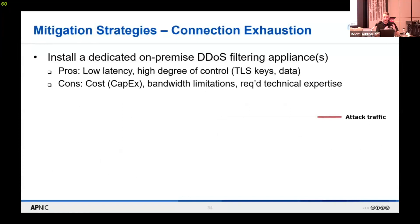You can also install dedicated on-premise DDoS filtering appliances. Benefits include low latency, because they're physically close to your network, and a high degree of control. Downsides include higher cost as a capital expenditure — buying a large physical box — and bandwidth limitations since it doesn't increase your network bandwidth or block traffic before it reaches your network. DDoS filtering appliances also require technical expertise to configure and operate properly.